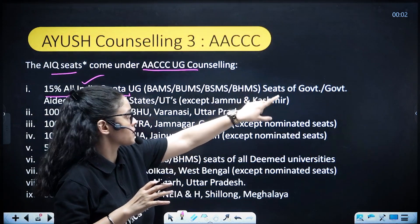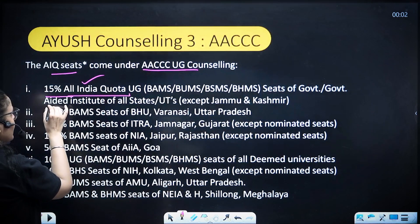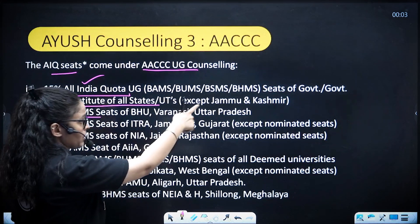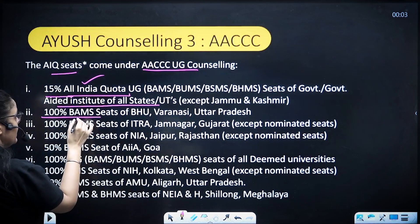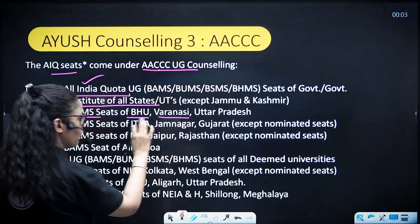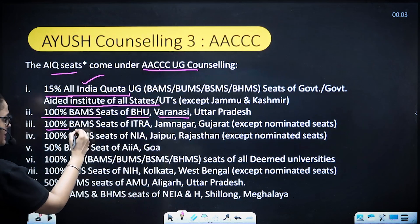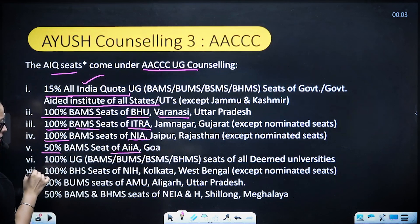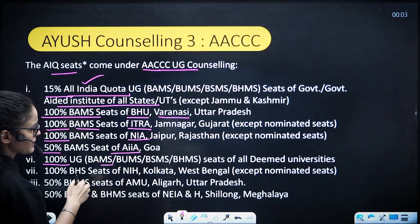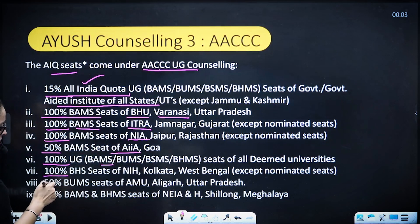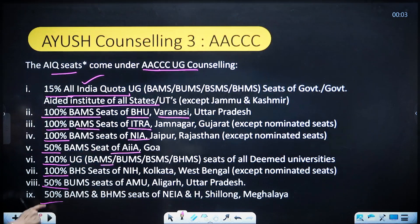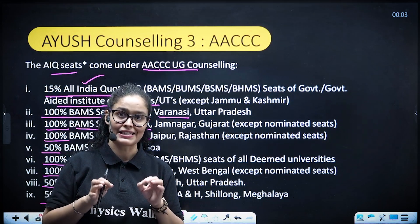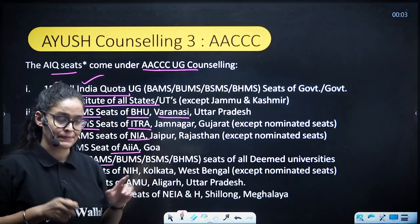What comes under the AACCC UG counseling All India seats: 15% All India Quota from all government college seats of all states; aided institutes of all states and union territories except Jammu & Kashmir; 100% BAMS seats in BHU and all central universities; 100% BAMS seats in Jamnagar; 100% BAMS in NIA Jaipur; 50% BAMS in NIA Goa; 100% in all deemed universities; 100% BHMS seats in Kolkata; 50% in AMU Aligarh; and 50% seats in NEIGRIHMS Shillong.